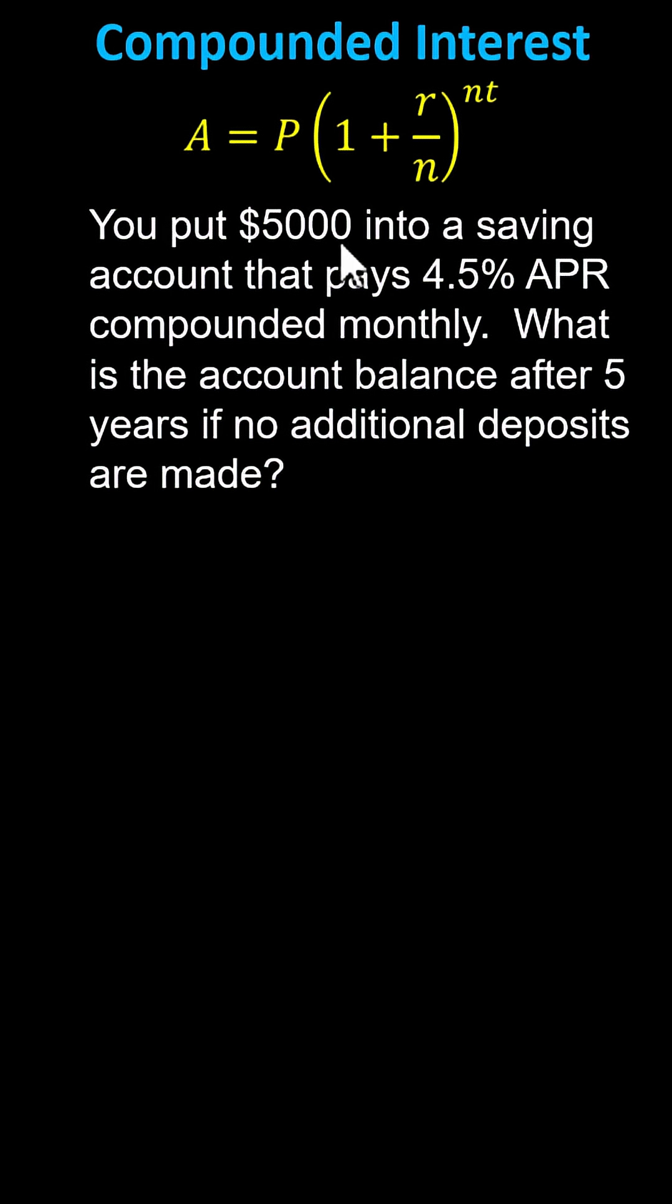As an example, you put $5,000 into a savings account that pays 4.5% APR compounded monthly. What is the account balance after 5 years if no additional deposits are made? This formula only works when there's one initial deposit and no additional deposits.